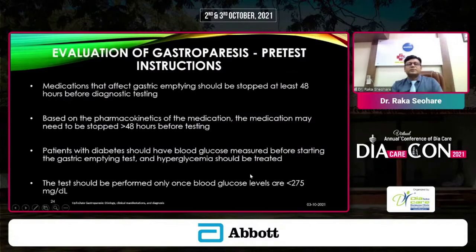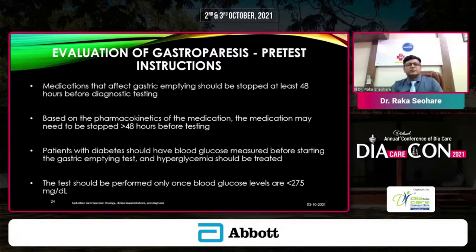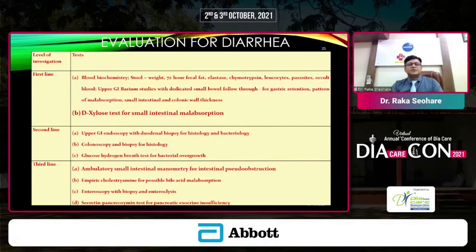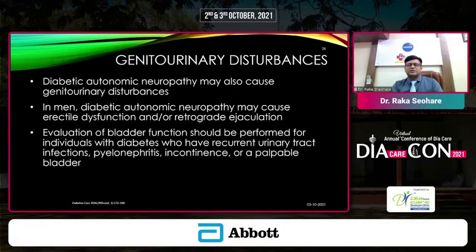Pre-test instructions require that medications affecting gastric emptying be stopped based on pharmacokinetics — more than 48 hours before testing. Patients with diabetes should have glucose measured before and after starting the test, with sugar levels below the threshold. First-line investigations include upper GI endoscopy, colonoscopy, and glucose hydrogen breath test. Second-line includes small bowel tests and biochemistry. Third-line is ambulatory small intestinal manometry for intestinal pseudo-obstruction. These GI autonomic neuropathy presentations are common in our patients but are often neglected.